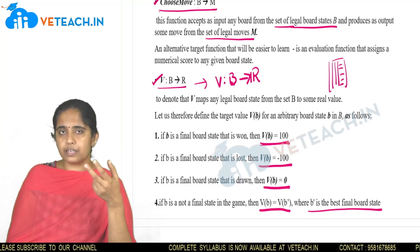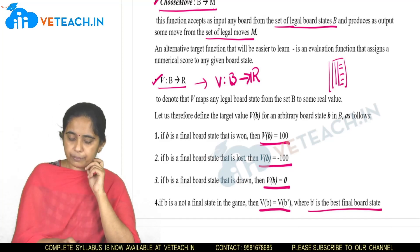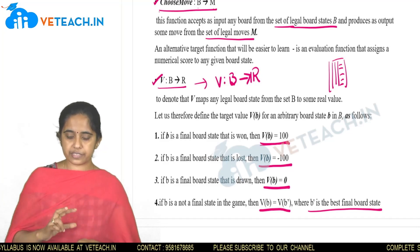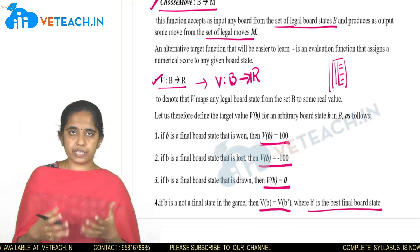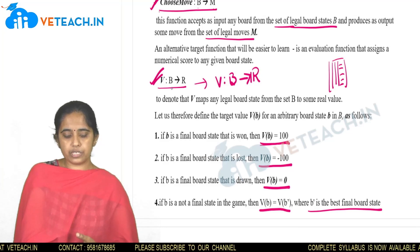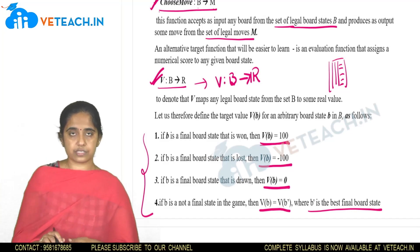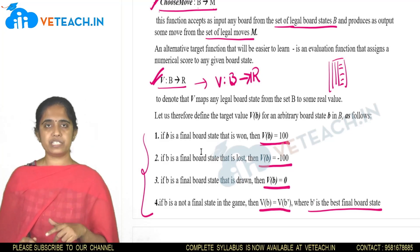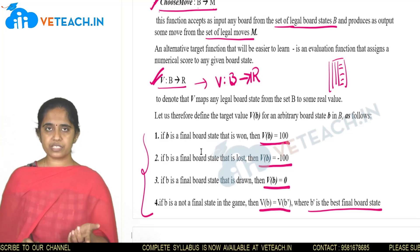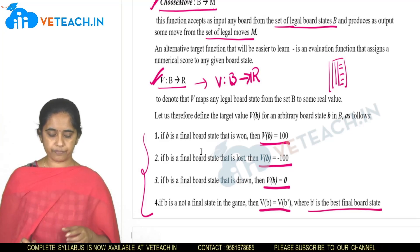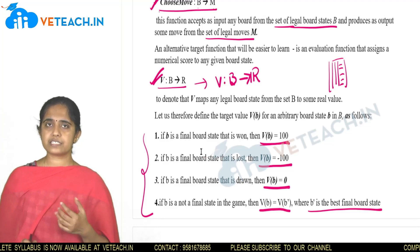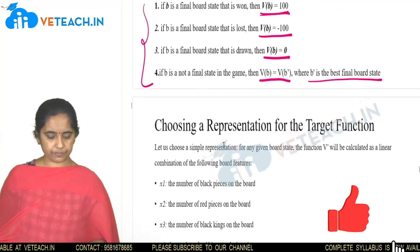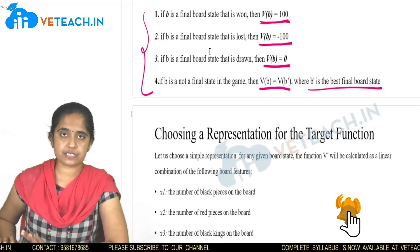This is how you represent the target function — it depends on the data set and the algorithm considered. For the checkers example, to move an object from one place to another requires a function, represented as ChooseMove. To simplify, we represent it as V: B → R. So V(b) = 100 means no further moves and we won; V(b) = -100 means we lost; V(b) = 0 means final board state with no further moves; and V(b) = V(b') means there are still moves remaining, with b' being the best move. These are the two major steps in designing a learning system — choosing the training experience and choosing the target function.